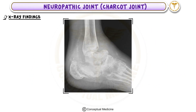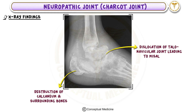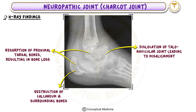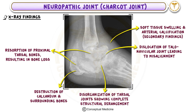On X-rays, several characteristic findings help identify Charcot Joint: destruction of the calcaneum and surrounding bones; dislocation of the talonavicular joint leading to misalignment; resorption of proximal tarsal bones resulting in bone loss; and disorganization of the tarsal joints showing complete structural derangement. Secondary findings include soft tissue swelling and arterial calcification.